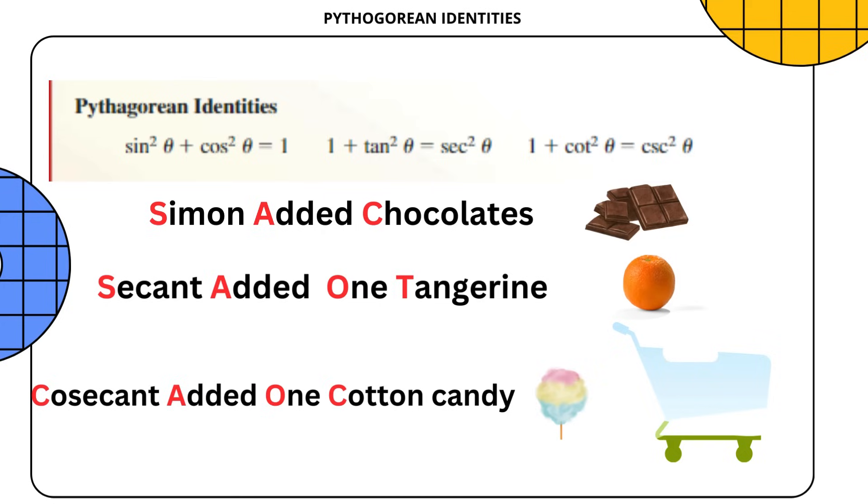Remember it is a square cart, so all are square values like sin² and cos². The other phrases are secant added 1 tangerine, so sec²θ = 1 + tan²θ, and csc²θ = 1 + cot²θ.